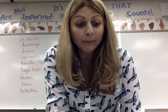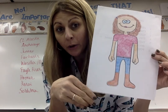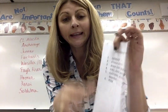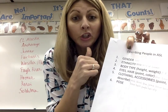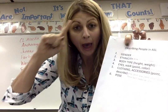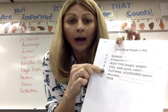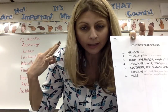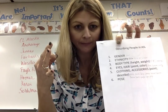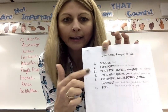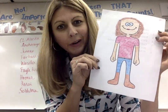All I'm going to expect from you is to color your person or your monster if you want to have some fun. Then sign the gender — girl or boy — ethnicity, the body type, height and weight, and clothing. Remember: point to the clothing, describe the clothing. And then accessories. Clothing is first, and then accessories. So that is your assignment.